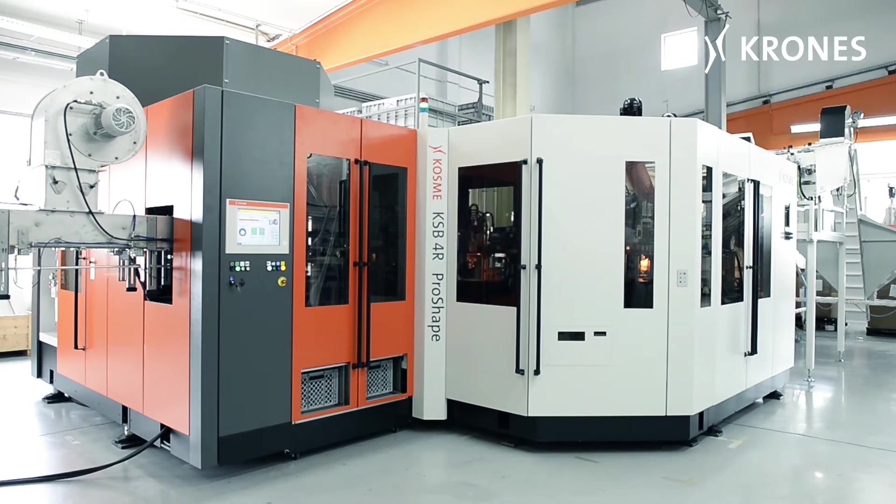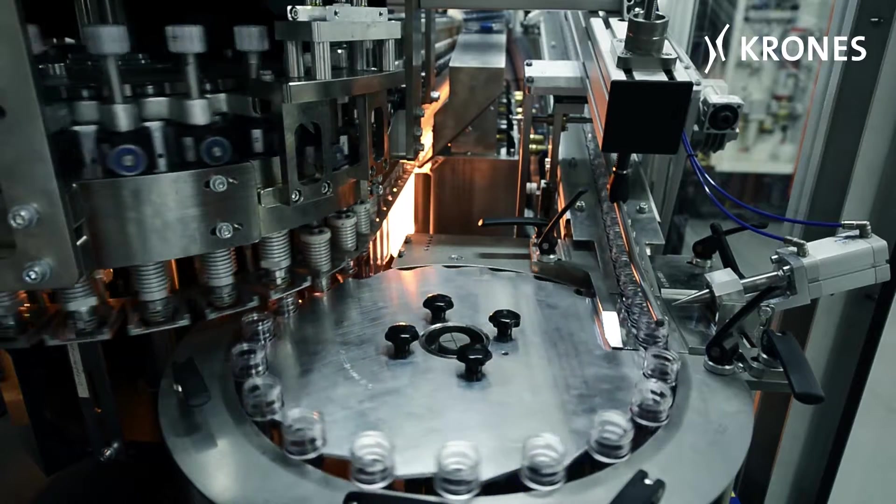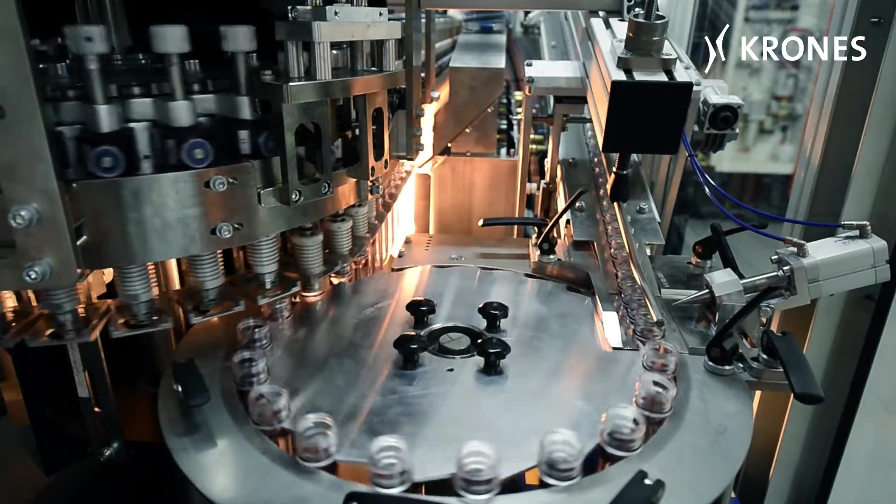The preform is first heated up evenly in the oven and then passed by a transfer star wheel to the ProShape module.